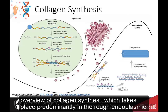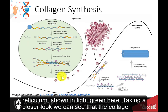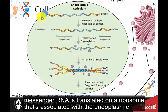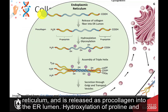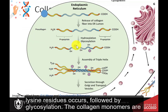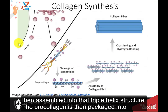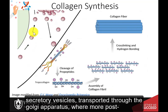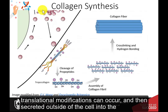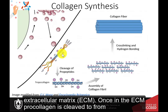This slide provides an overview of collagen synthesis, which takes place predominantly in the rough endoplasmic reticulum. The collagen messenger RNA is translated on a ribosome associated with the endoplasmic reticulum and released as procollagen into the ER lumen. Hydroxylation of proline and lysine residues occurs, followed by glycosylation. The collagen monomers are then assembled into a triple helix structure. The procollagen is packaged into secretory vesicles, transported through the Golgi apparatus where more post-translational modifications can occur, and then secreted outside of the cell into the extracellular matrix.